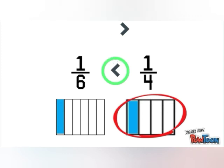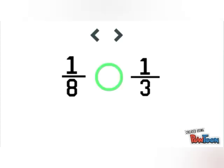So in 1 upon 8 and 1 upon 3, the denominator 3 is smaller than the denominator 8. So that means 1 by 3 is greater than 1 upon 8.